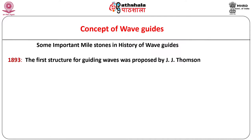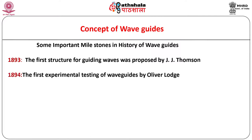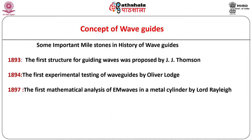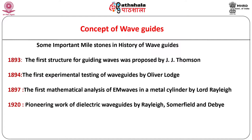The first structure for guiding waves was proposed by J.J. Thomson in 1893 and was first experimentally tested by Oliver Lodge in 1894. The first mathematical analysis of electromagnetic waves in a metal cylinder was performed by Lord Rayleigh in 1897. The waveguides may be air-filled or can have some other dielectric. Rayleigh, Sommerfeld and Debye are famous for their pioneering work on dielectric waveguides such as optical fibers at around 1920.